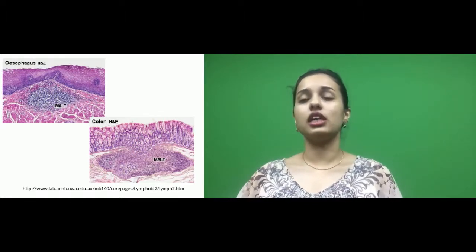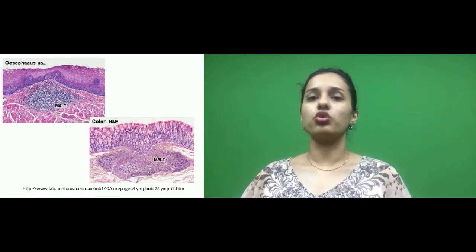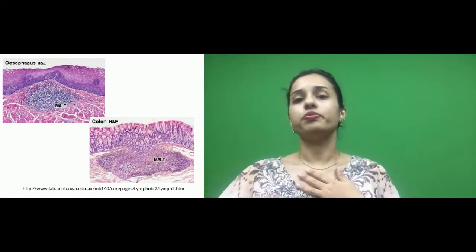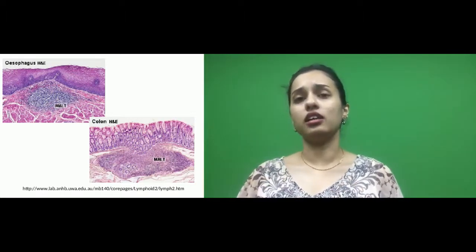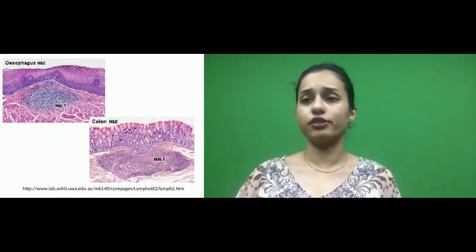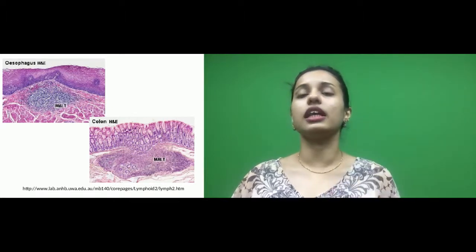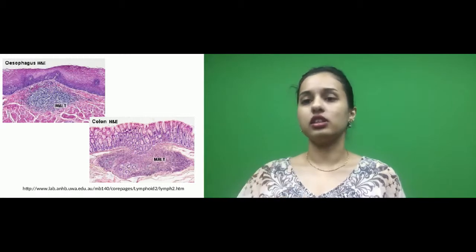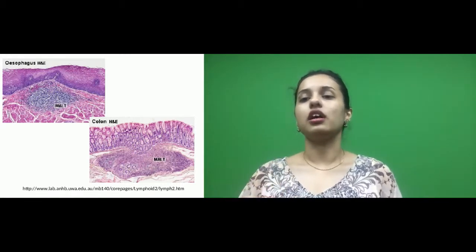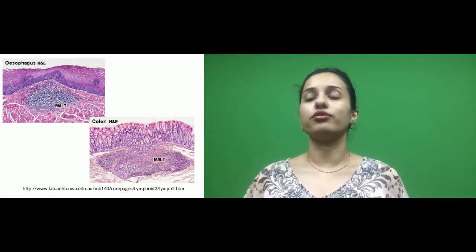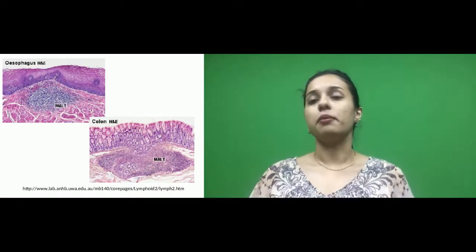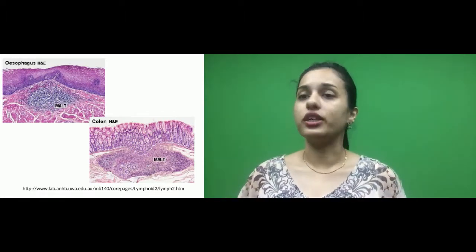In this picture you can see the mucosa of the esophagus and the colon, which are parts of the gastrointestinal tract. The esophagus is lined by stratified squamous epithelium, and beneath the lining you can see the lymphatic tissue. In the colon you can also see aggregation of lymphatic tissue. These two pictures give examples of MALT present in the gastrointestinal tract.